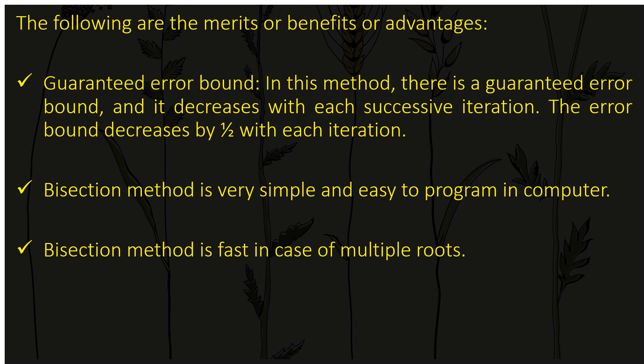The next benefit is that the bisection method is very simple and easy to program in a computer, since it only involves calculating the average of two numbers and finding f(x). It is also the first choice in the case of multiple roots. These are the advantages, merits, and benefits of using the bisection method.